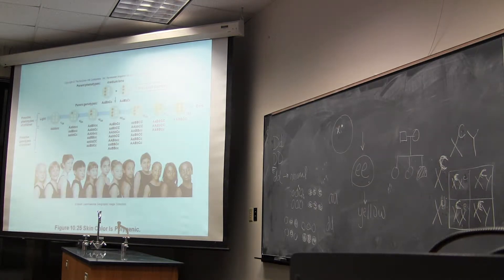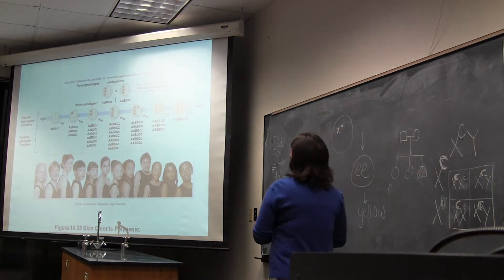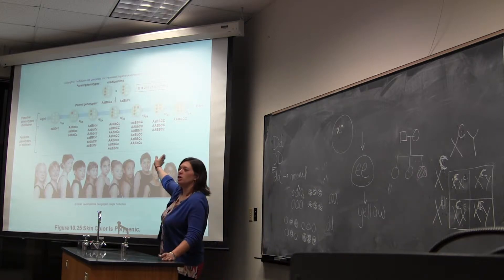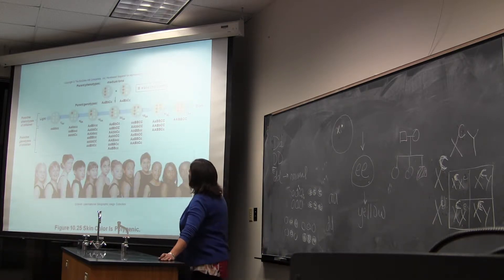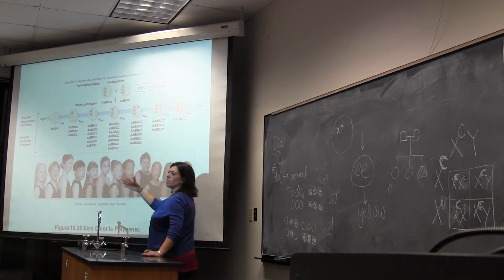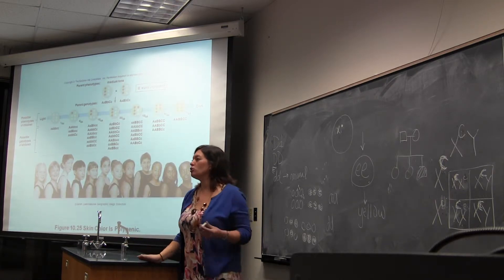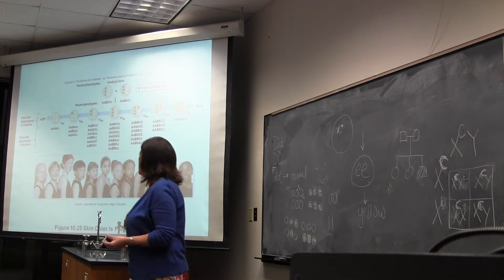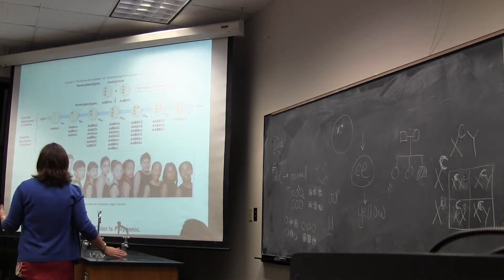All right. So, skin color. Here we are. Again, you have multiple different genes contributing to the skin color phenotype. In this case, you're going to have three different genes, genes A, B, and C, but each one's going to have two different alleles. So you have six different alleles contributing to a phenotype, and again, it's a matter of dosage.